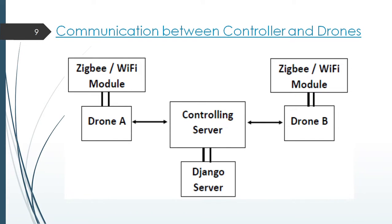This diagram depicts the communication between controller and the drones. Each drone will have Zigbee or Wi-Fi module for communicating among them as well as the controlling server.